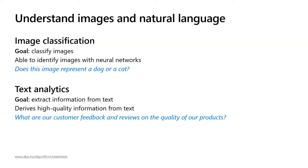Another category is understanding images and natural language. Here you might have image classification — the question might be: does this image represent a cat or a dog? If you've used Azure Cognitive Services with computer vision or custom vision, you might have run into these. One of my favorites is comparing a skydiver to a scuba diver, because basically it is a human floating in blue. These types of algorithms use other features of the image to identify whether someone is underwater or in the sky. Another type is text analytics — what are our customers' feedback and reviews on the quality of our products? We've done a lot of sessions in the student zone that use this type of machine learning algorithm in the back end.